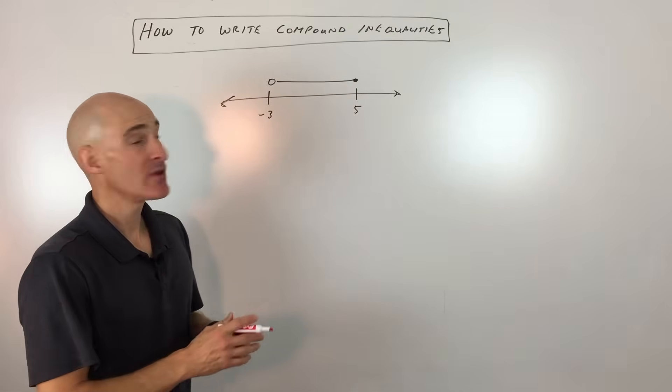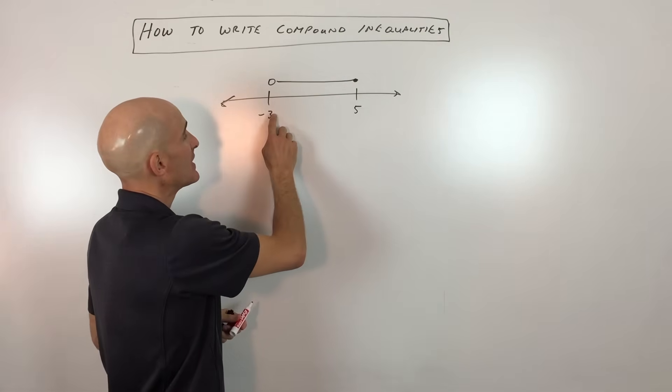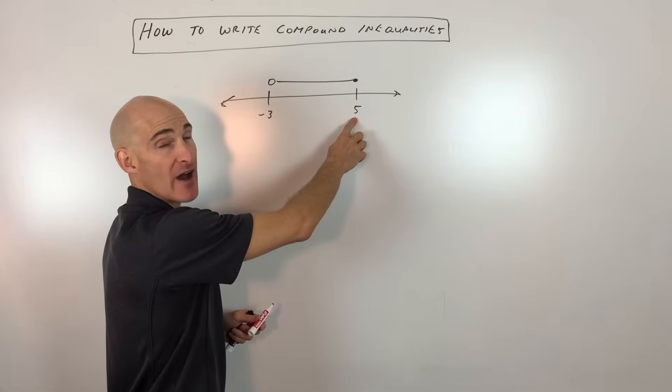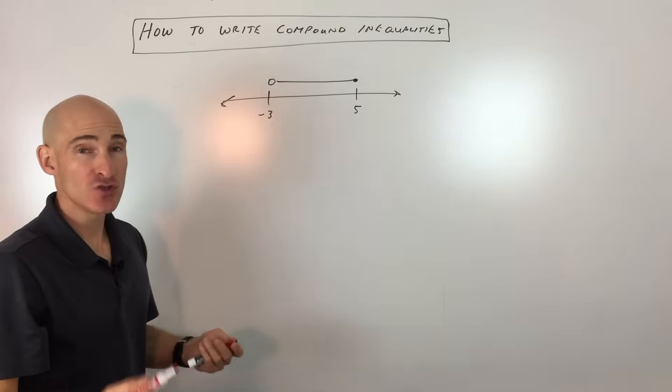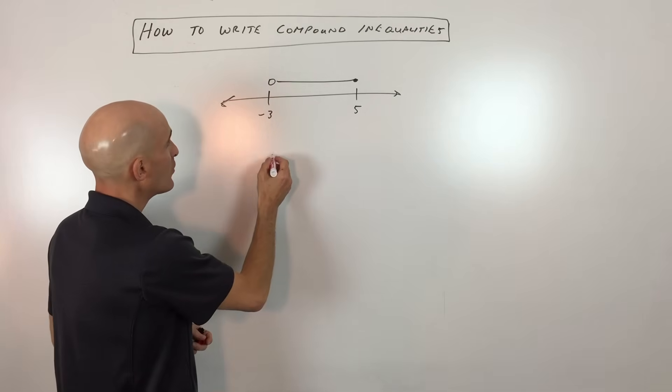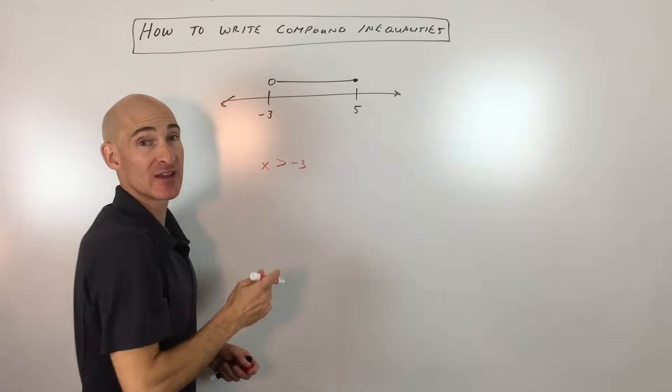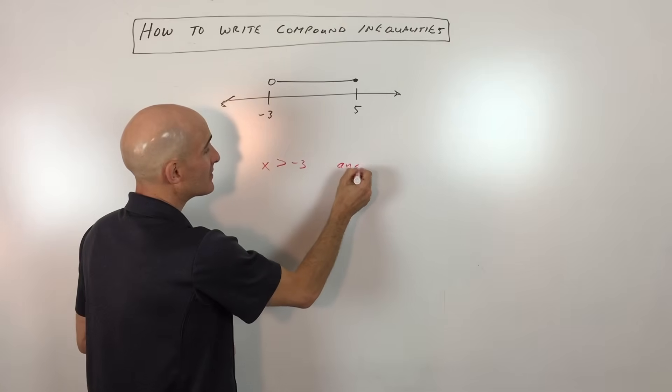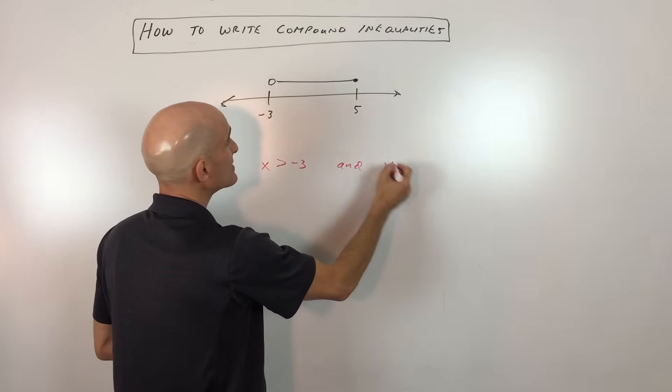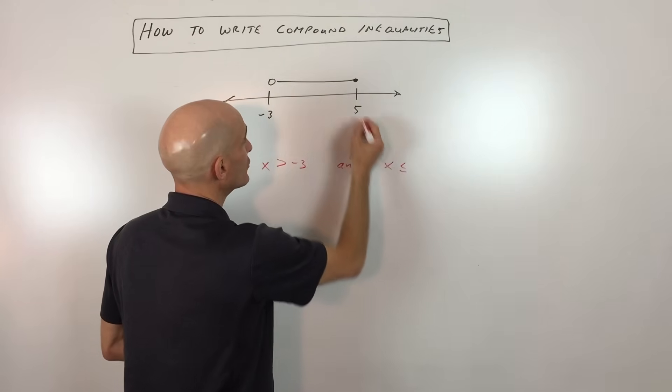Let's say that you're trying to describe this set of numbers. It's in between negative 3 and 5. Now one way you might do this is you might say, we can see that the values are greater than negative 3, so meaning to the right of negative 3, and they're less than or equal to 5.